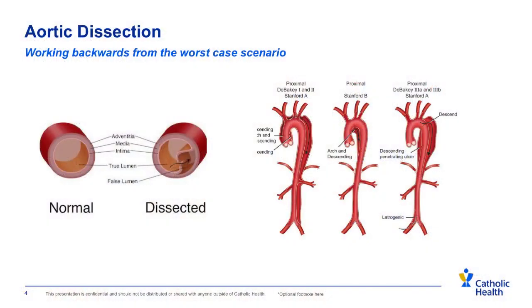On the left side of your screen, you can see an aorta with the three layers that normally comprise a healthy blood vessel. In the picture on the left side, there's a small tear on the innermost level that allows blood to travel into the wall of the blood vessel. Once blood enters the wall, it can cause further rupture or compromise blood flow to other parts of the body. This is called an aortic dissection.